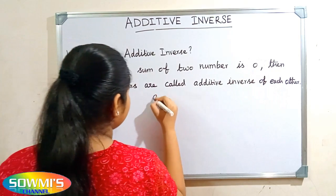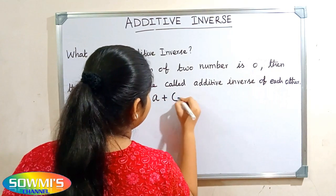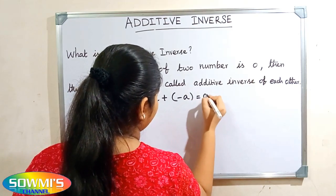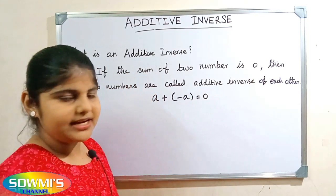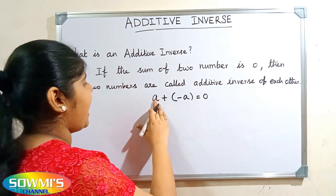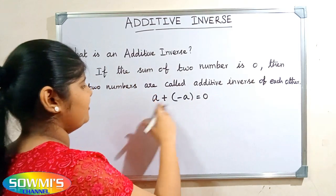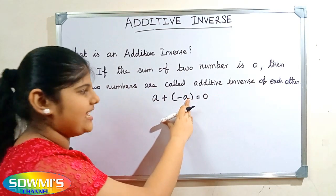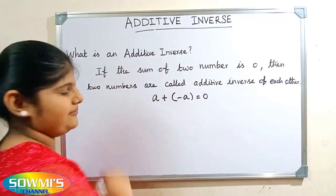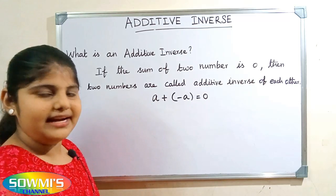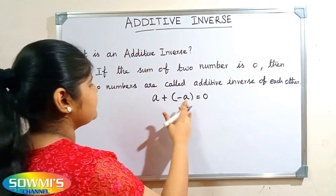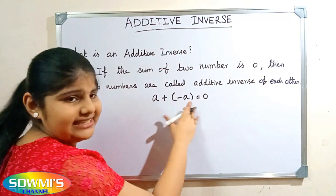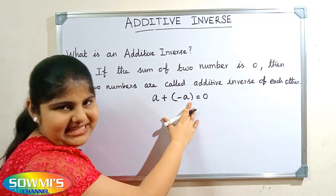That is, a plus minus a is equal to zero. Here, a is the additive inverse of minus a, and minus a is the additive inverse of a. That is, the opposite numbers are always additive inverse of each other.